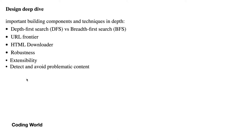We can traverse pages using breadth-first or depth-first traversal. The URL frontier is the main component that provides the next URL to download. Robustness is important because the crawler runs 24 hours a day — if your system goes down there must be a mechanism to handle those cases. Extensibility is also important so that adding or removing downloader servers is easy. We also need to detect and avoid problematic content.